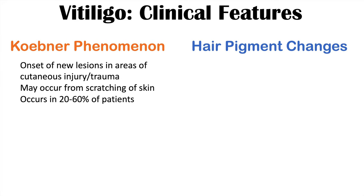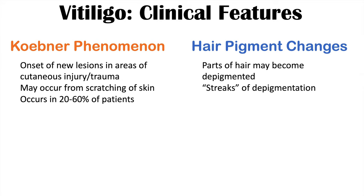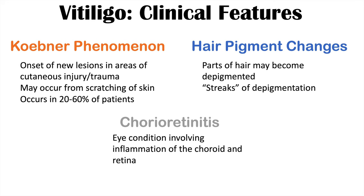There can also be hair pigment changes in patients with vitiligo, where parts of the hair become depigmented, appearing as streaks of depigmentation. Additionally, some patients with vitiligo can develop chorioretinitis — an eye condition involving inflammation of the choroid and retina — which can increase the risk of vision loss and is important to recognize.